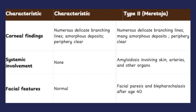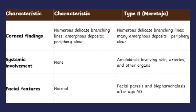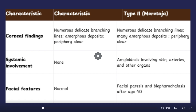Regarding systemic involvement, it is absent in Type 1. But in Type 2, you may see amyloid deposits in the skin, blood vessels, and other organs, along with cranial nerve paralysis and the facial features described.